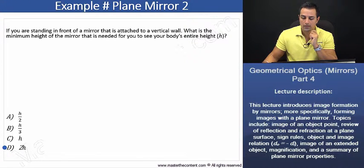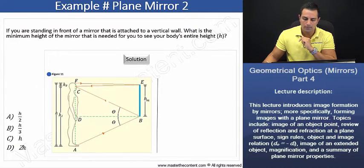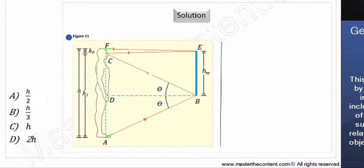To attempt this, we'll first go ahead and explain what's going on here. And to do so, we'll use figure 11. If we take a look here at figure 11, firstly, to see your whole body, rays from the top of your head and the bottom of your feet must reflect and enter your eye. Moreover, note that the height of the mirror is equal to length DC plus half of length CF.